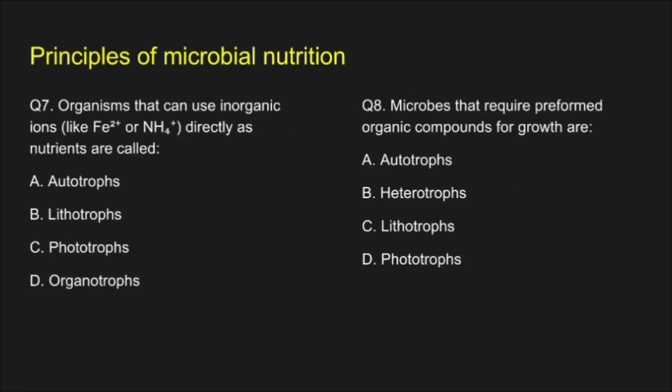Question 7. Organisms that can use inorganic ions like Fe²⁺ or NH₄⁺ directly as energy sources are called — A. Autotrophs, B. Lithotrophs, C. Phototrophs, D. Organotrophs. The correct answer is Lithotrophs, option B.